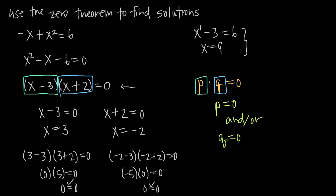So x equals three and x equals negative two are both solutions to the equation, and that's how you use the zero theorem to find solutions to a quadratic equation.